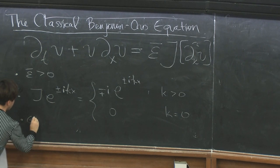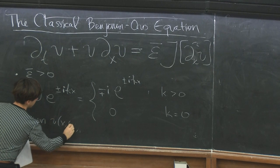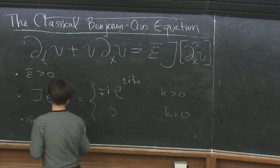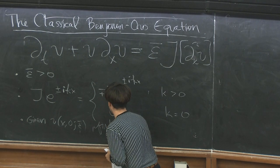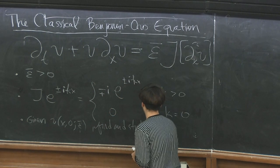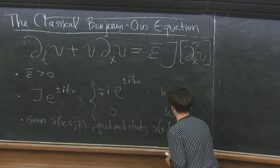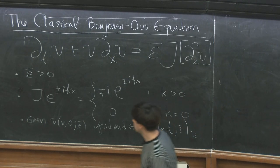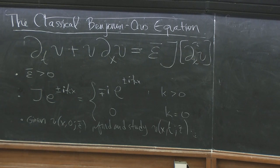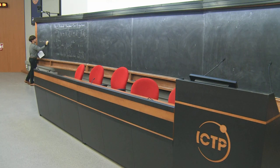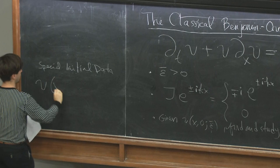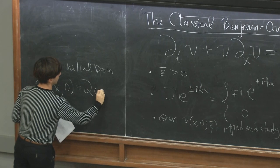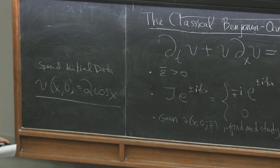The goal in general: given v of x at time zero, possibly depending on epsilon, you want to find and study the solutions of this equation. There are many well-posedness results for this equation in the literature. A special example is the special initial condition v(x,0) = 2 cos(x). We'll be revisiting this initial value problem throughout the talk.